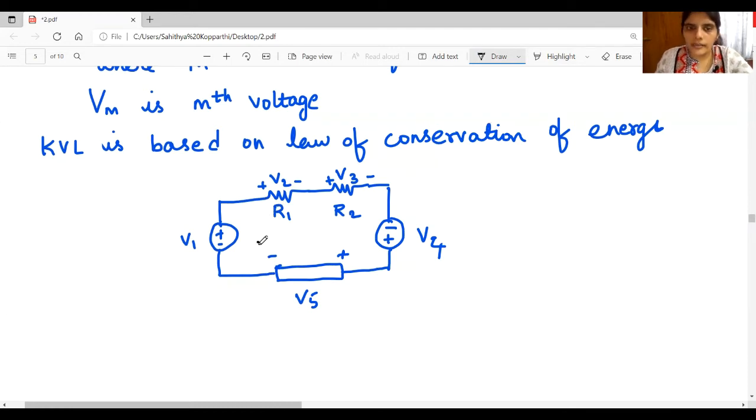Now I am assuming clockwise direction and then starting from V1. If you wish, you can start from V2 also. What is the sign first time encountering while going in clockwise direction? Minus. So minus V1. For V2 you encounter positive sign plus V2. You're encountering positive sign for V3. Plus V3. And you're encountering minus. So minus V4 plus V5 equals to zero.